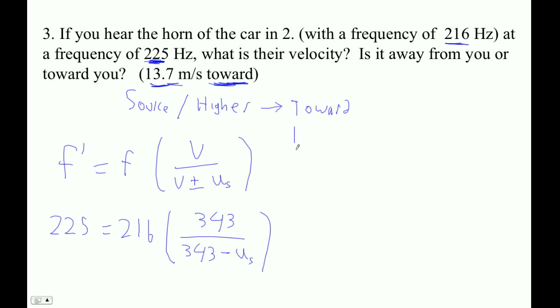Okay, so the next thing to do is: 225/216 = 343/(343 - us). Now we're going to cross multiply.